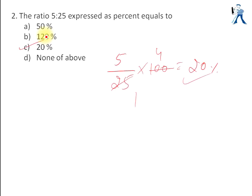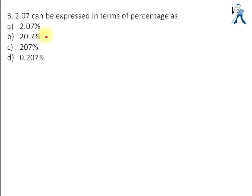Though it's an intro video, we are going through simple examples. Next question: 2.07 expressed in terms of percentage. It is simply 2.07 multiplied by 100, which equals 207%. The answer is option C.